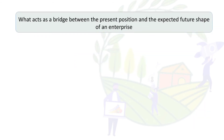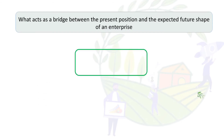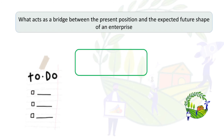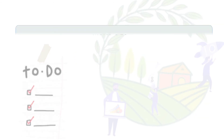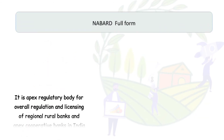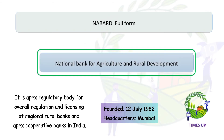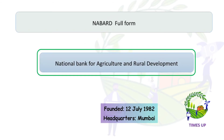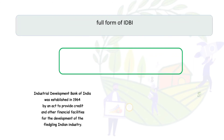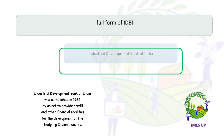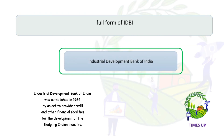What acts as a bridge between the present position and the expected future shape of an enterprise? The answer is planning. The full form of NABARD is National Bank for Agriculture and Rural Development. The full form of IDBI is Industrial Development Bank of India.